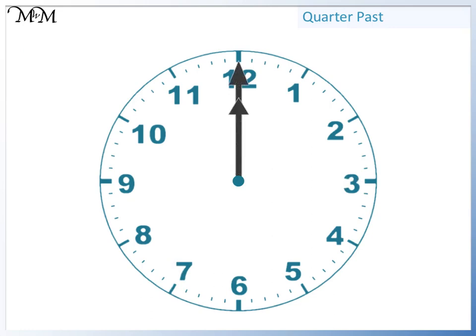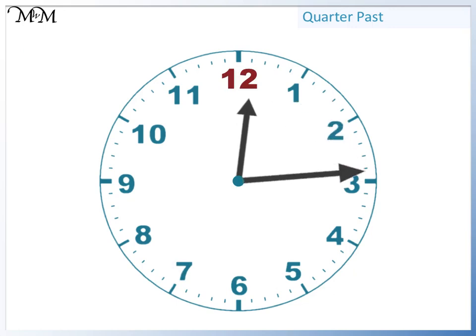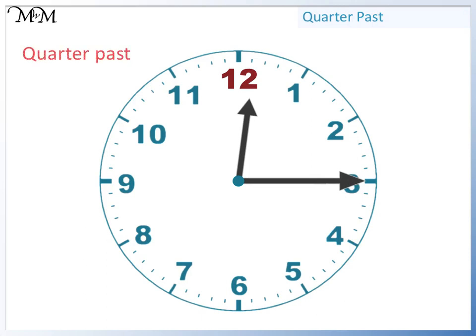Finally, we'll start at twelve o'clock. The minute hand moves around to three. So, the time will be quarter past. The hour hand is past twelve. So, the time is quarter past twelve.